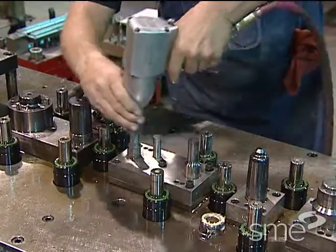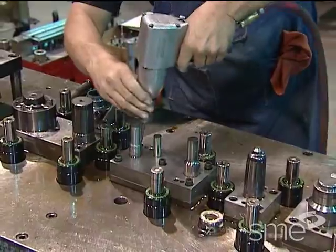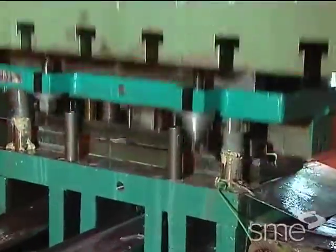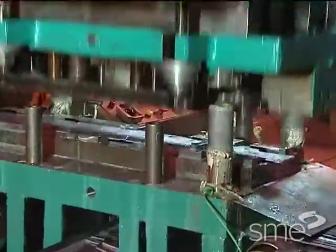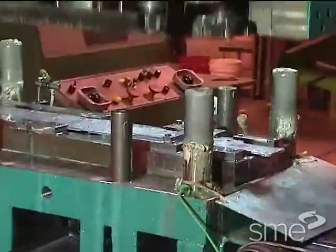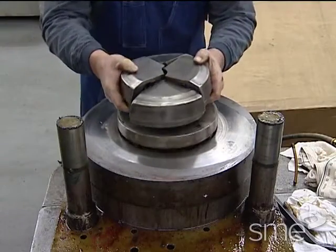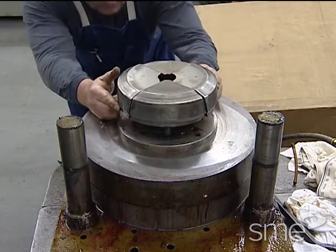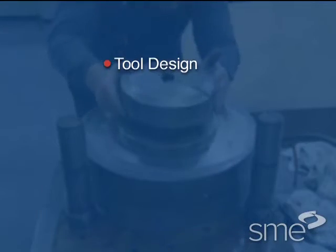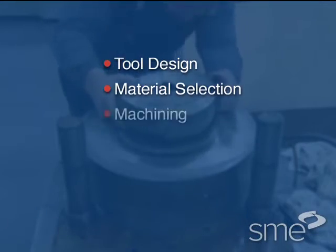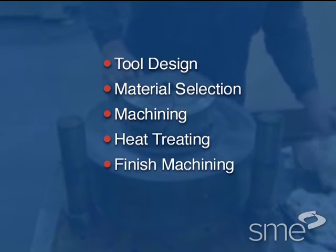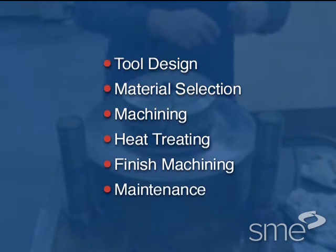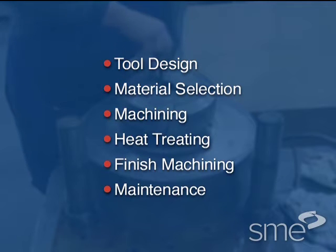Tool and die troubleshooting goes far beyond routine maintenance and repair. The goal is to optimize your tooling investment by balancing tooling costs against the expected return on investment. This task becomes complicated as there are many activities involved, including tool design, material selection, machining, heat treating, finish machining, and maintenance. All of these activities interact to affect the overall production performance of a tool.